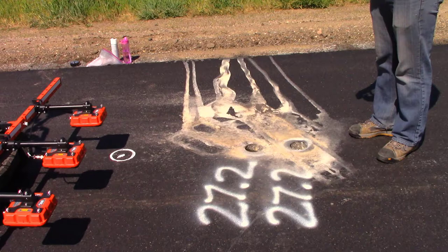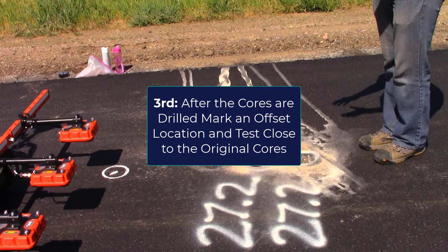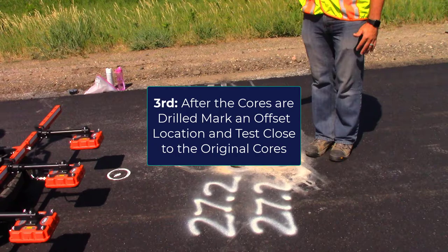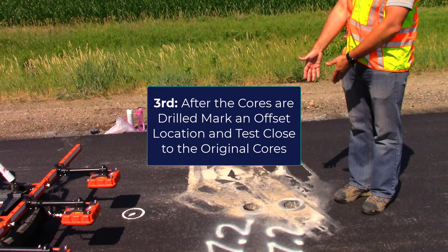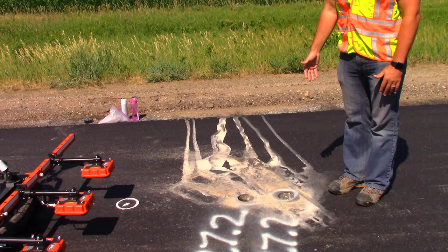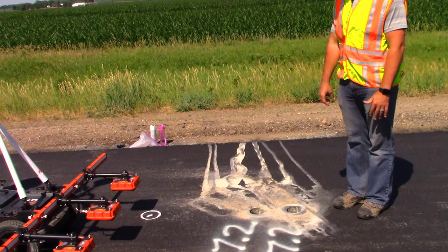The third way is if there's already a core taken at that location, moving either longitudinally prior to or after the core location to get a representative dielectric close to where the core was actually taken. This is not ideal because if there's any variation in air void content this measurement won't be representative, but it's the best we can do. In this case we actually did get the dielectric at the actual core location.